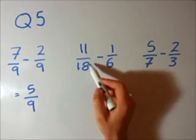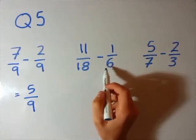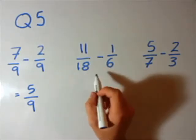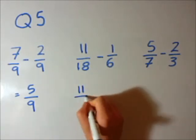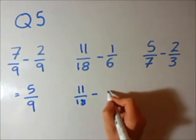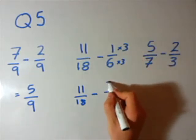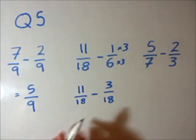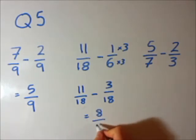Let's look at the second one: 11 over 18 minus 1 over 6. Our denominators aren't equal, so we need to find the lowest common multiple of 18 and 6. Well, 6 goes into 18 — 6 times 3 is 18 — and 18 goes into 18. So we can write this as 11 over 18 minus — we have to times 1 over 6 by 3 top and bottom — so that's 3 over 18. Now our denominators are equal, so we subtract the top: 11 minus 3 is 8 over 18.